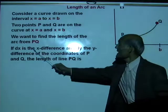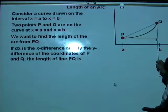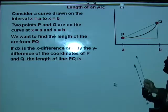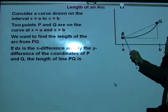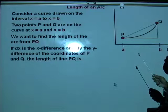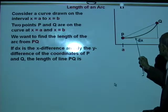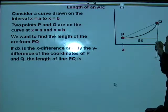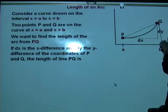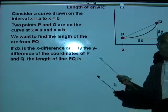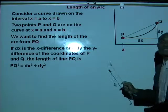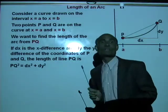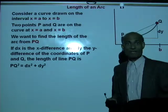If dx is the x difference, and dy is the y difference of the coordinates of p and q — if the coordinate of p is (x1, y1) and the coordinate of q is (x2, y2) — then dx is x2 minus x1, and dy is y2 minus y1. The straight-line distance pq is such that pq² = dx² + dy². That's the Pythagorean theorem.